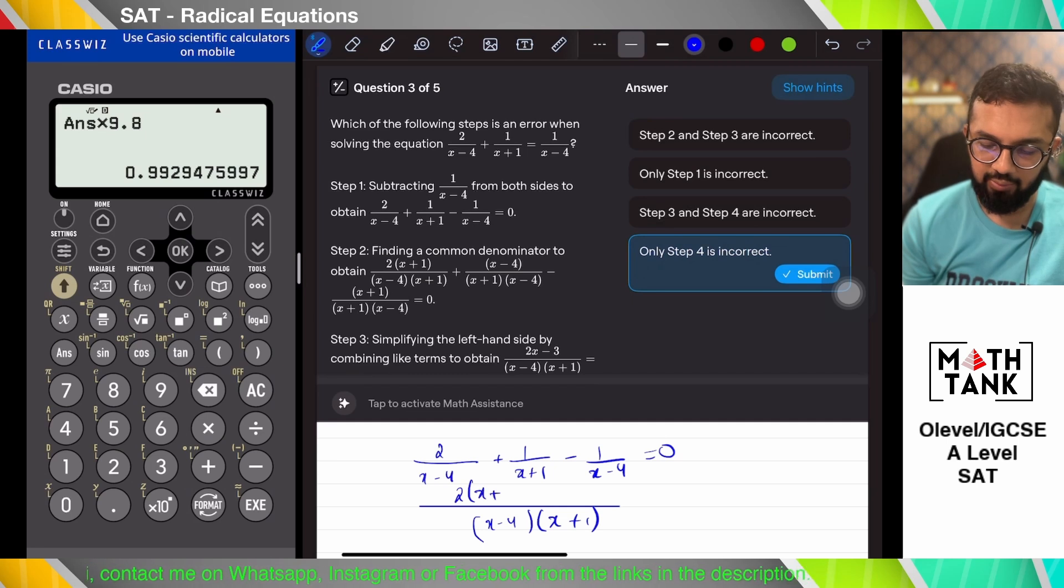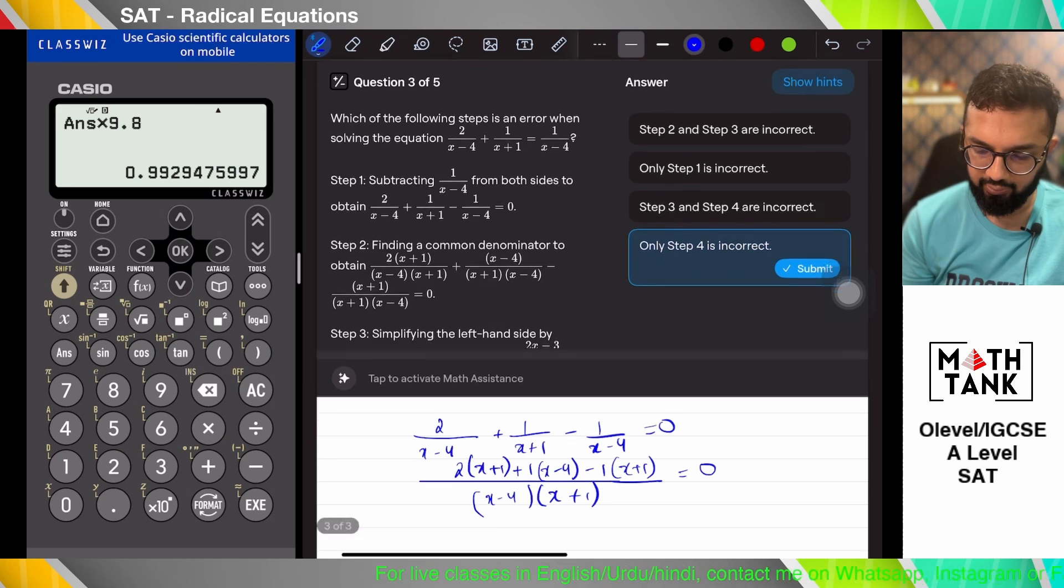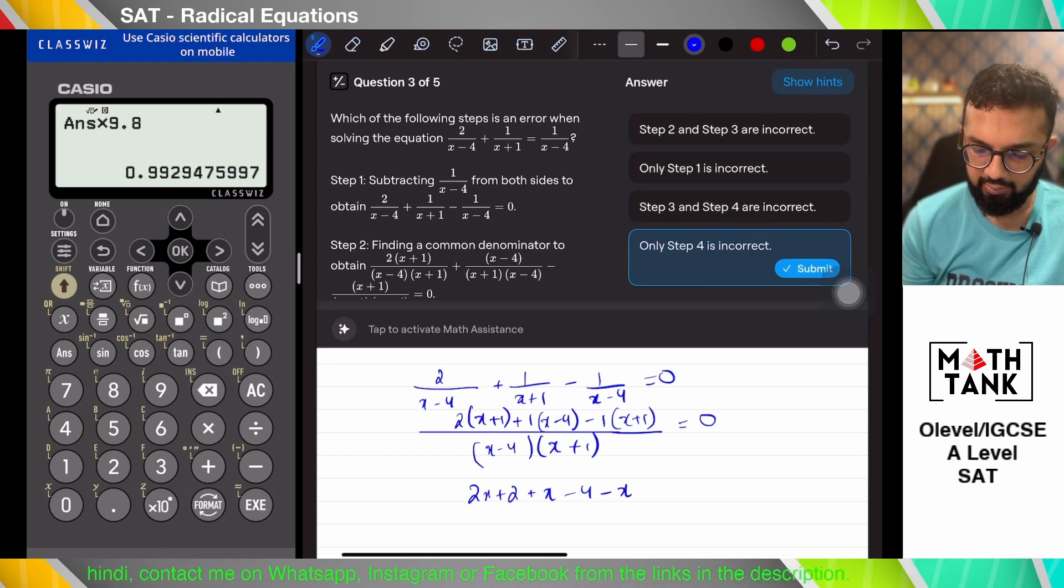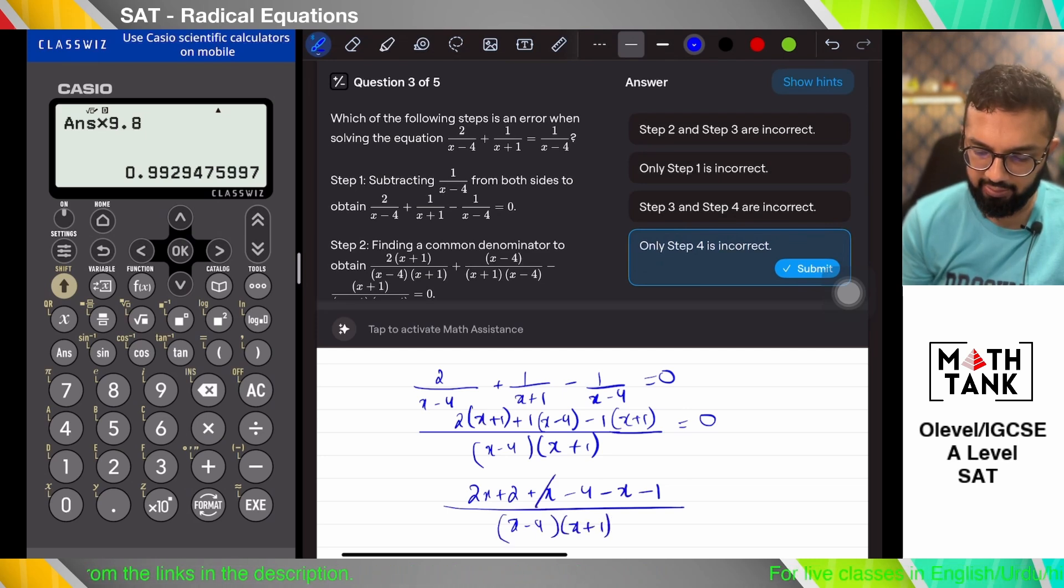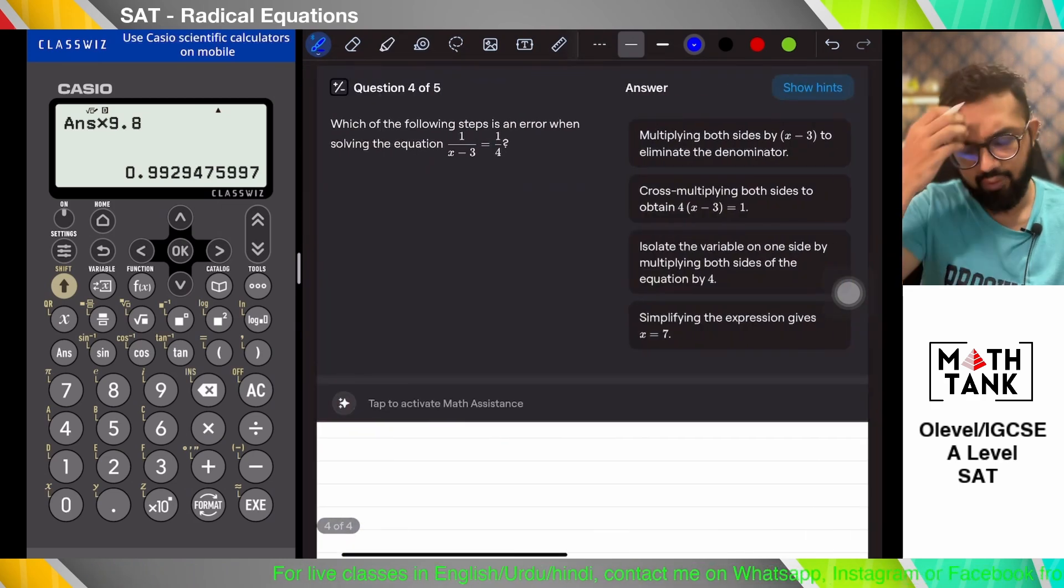2 times x plus 1 plus 1 times x minus 4 minus 1 times x plus 1. So 2x plus 2 plus x minus 4 minus x minus 1. Okay, so plus x minus x cancels there. 2 minus 4 minus 2. So 2x minus 3 over this. So the only step 4 is incorrect, I think. Yeah, the rest of it was fine.